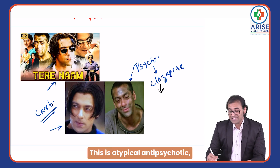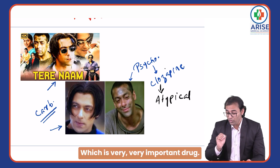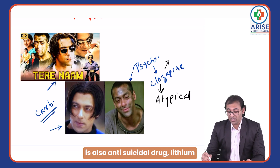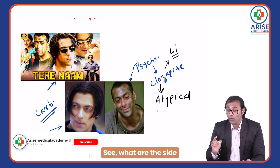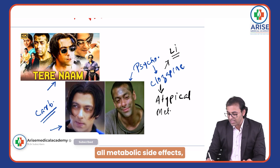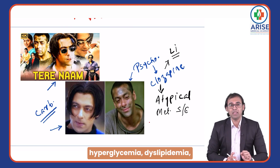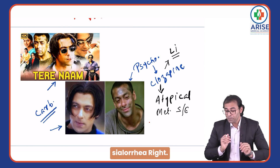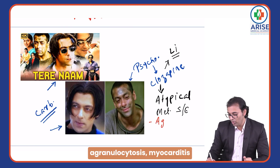Remember, clozapine is an atypical antipsychotic — a second-generation antipsychotic — a very important drug. Clozapine and lithium are anti-suicidal drugs. The side effects of clozapine include all metabolic side effects: hyperglycemia, dyslipidemia, weight gain, most sedation, and sialorrhea. The grave side effects of clozapine include agranulocytosis.